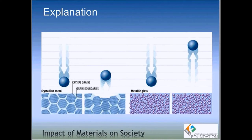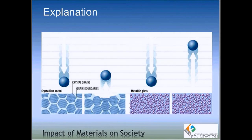In the video, steel balls dropped on crystalline surfaces bounced a couple of times and very quickly came to rest. But in the case of amorphous metal, the steel ball kept bouncing for an extended duration and also bounced very high. The difference in behavior can be explained by looking at the atomic structure of crystalline and amorphous metals, which is schematically depicted in the lower part of the slide.